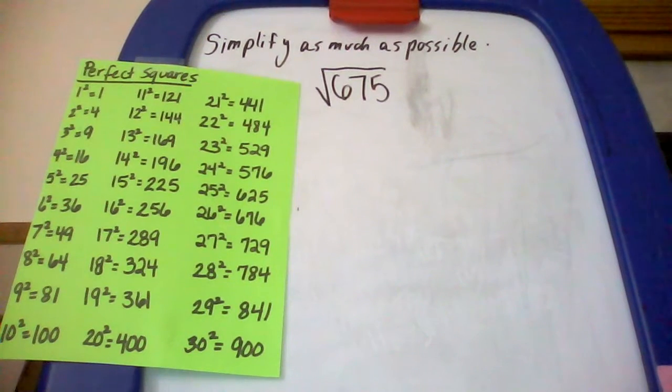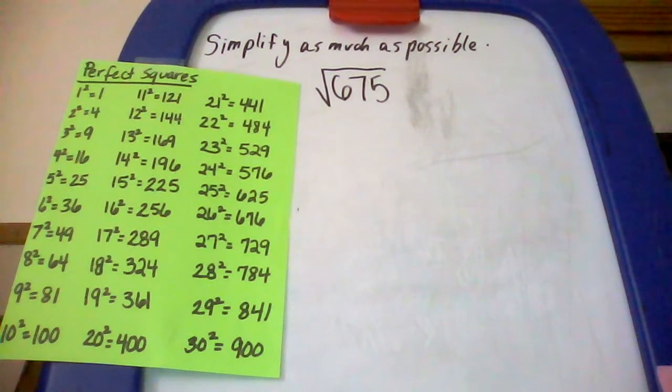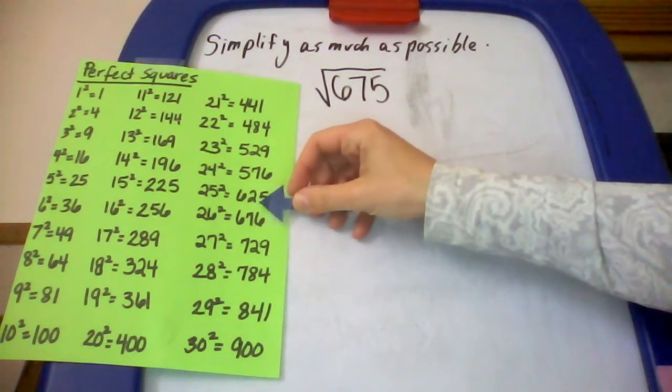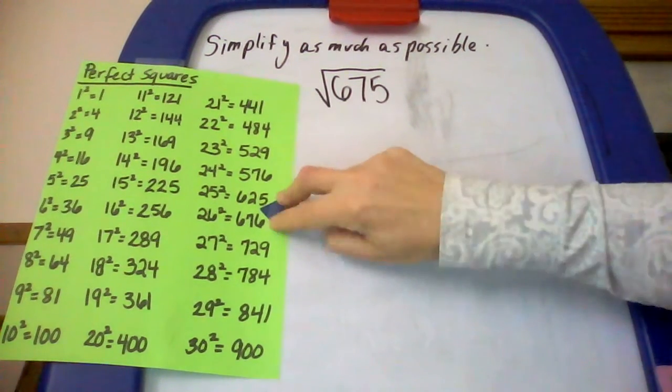Okay, and I'll go over the solution to this one as well, the square root of 675. Now this is a rather large number. We're all the way here between 625 and 676.